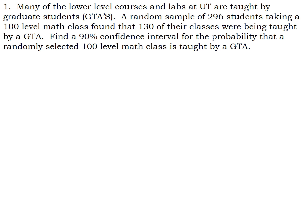We have a sample of 296 students who are taking 100 level math classes, and the proportion of those that have a GTA teaching a class is 130 divided by 296. You want to leave this fraction alone. You don't want to round it. We need the exact value as we move forward with our formulas.